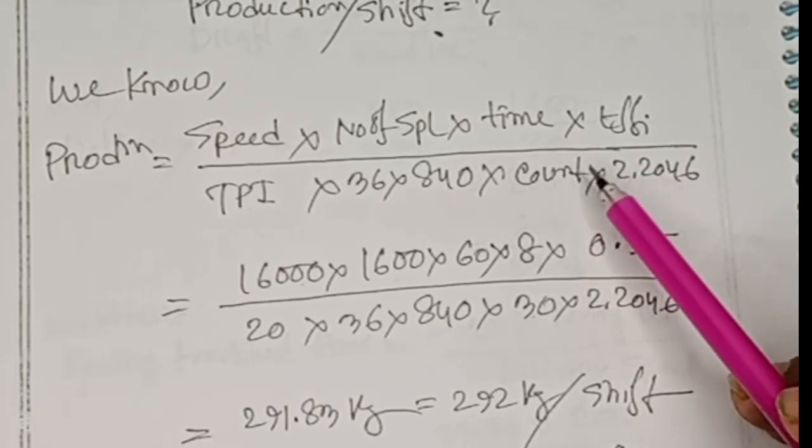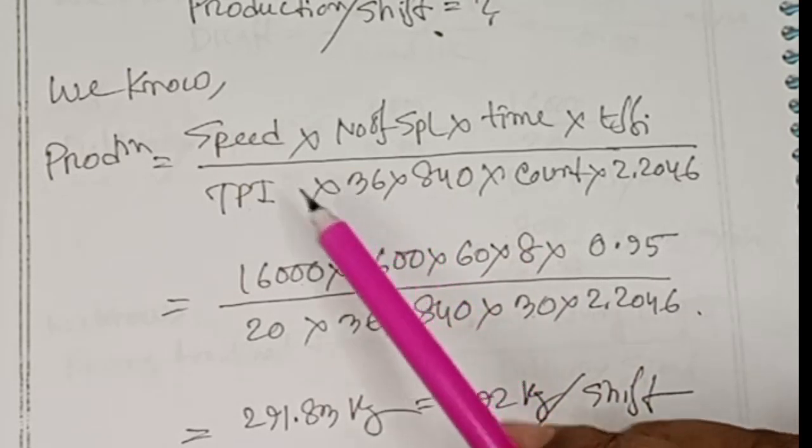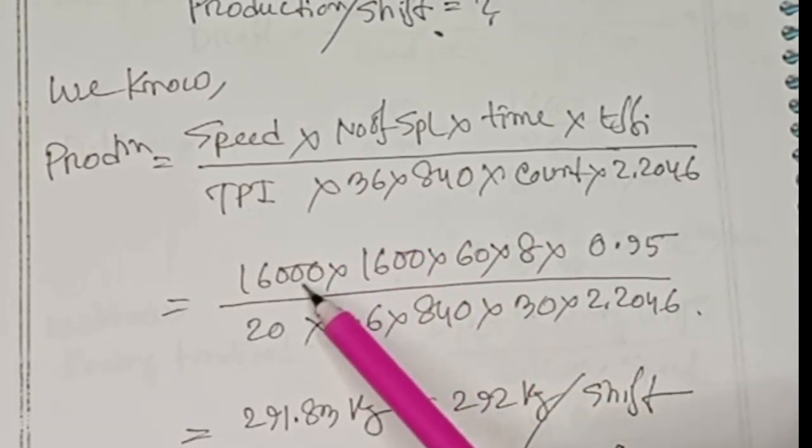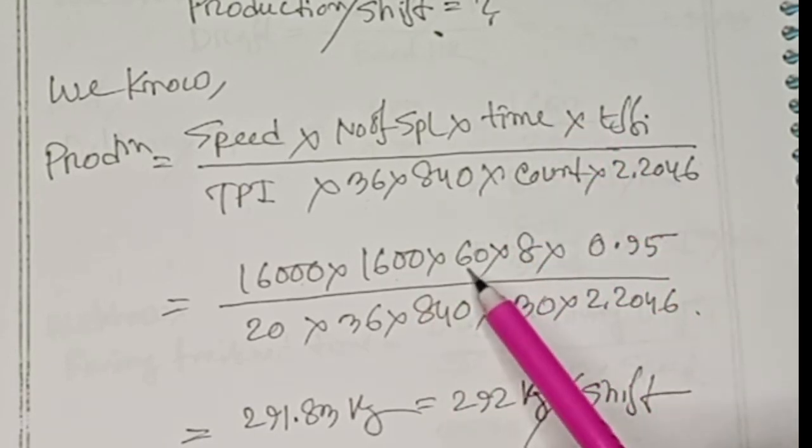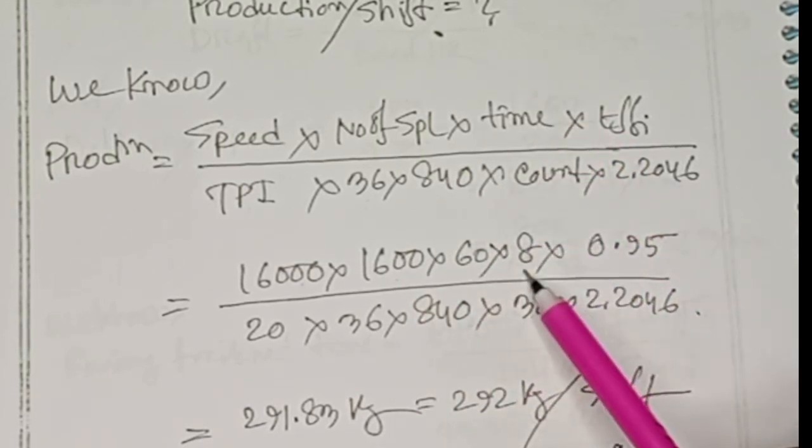So speed 16,000, number of spindles 1600, time 60 for 1 hour times 8 hours for a shift, and efficiency is 95%.